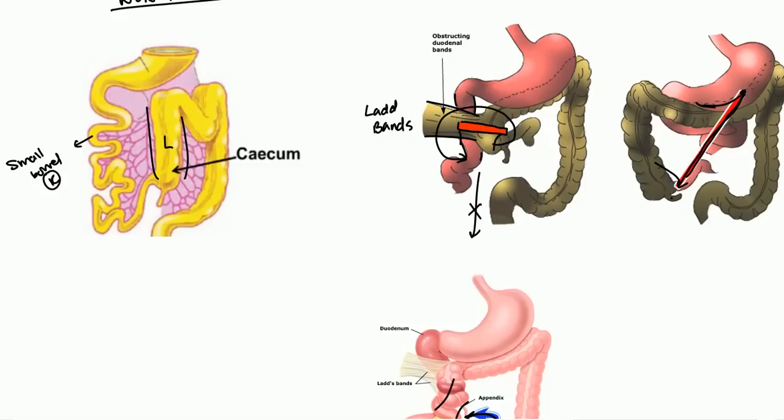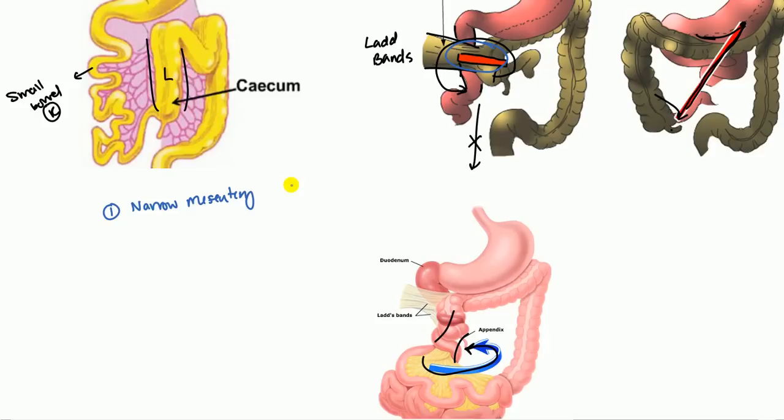I've kind of alluded to concepts here of where the symptoms actually come from. So the symptoms are caused by two main pathologies. The first is going to be the narrow mesentery that I talked about. So this narrow mesentery here will allow volvulus, this volvulus to occur. And so this volvulus can lead to ischemia and necrosis. And secondly, it's due to the LAD bands. So the LAD bands will cause duodenal obstruction.